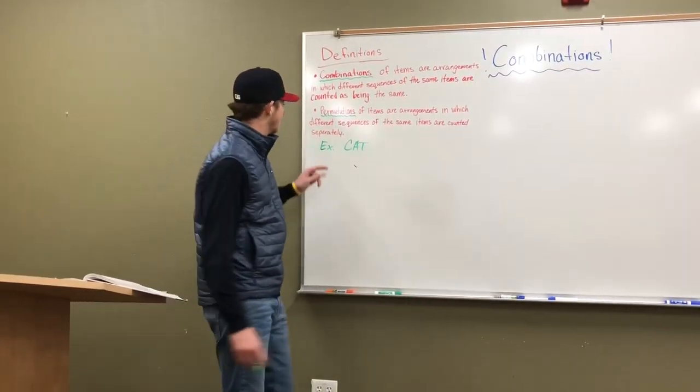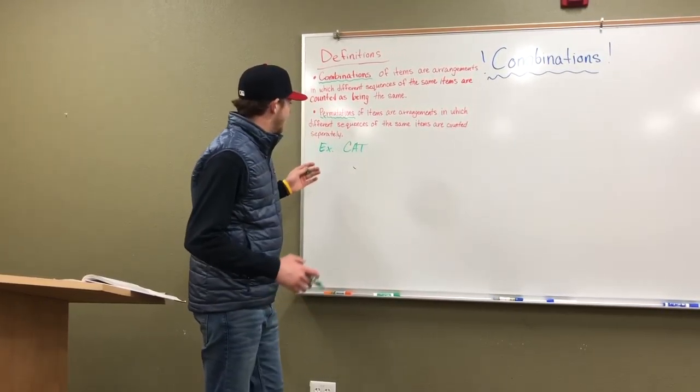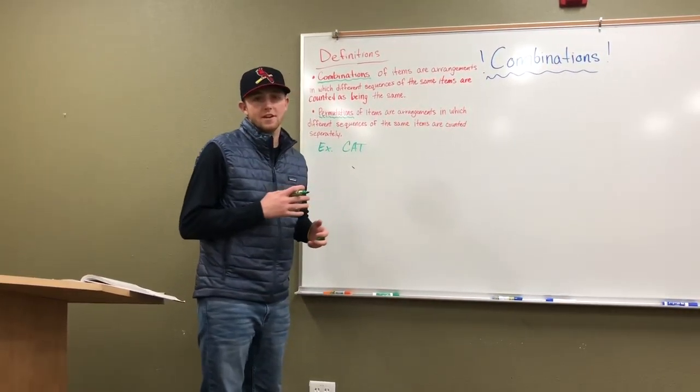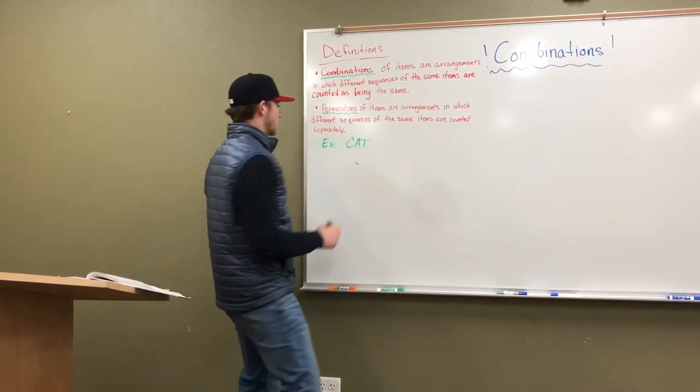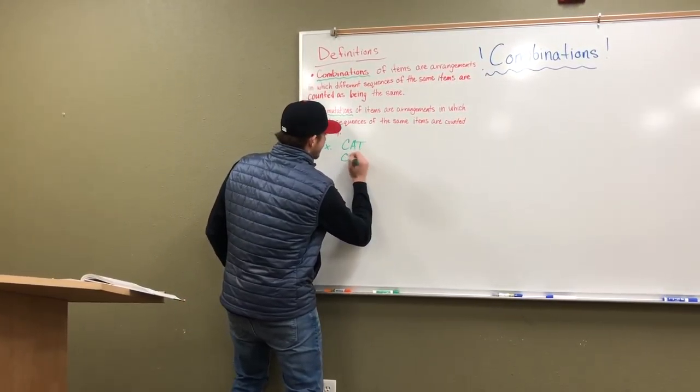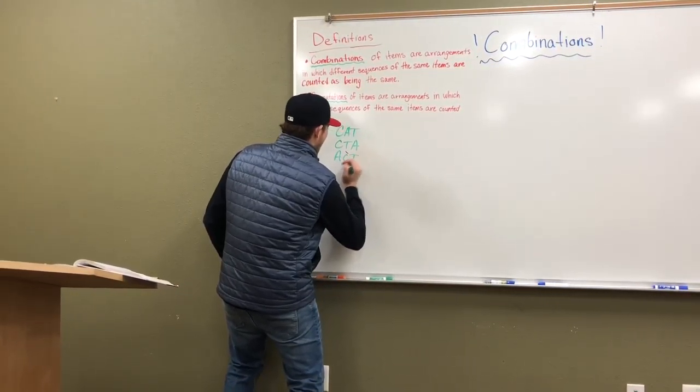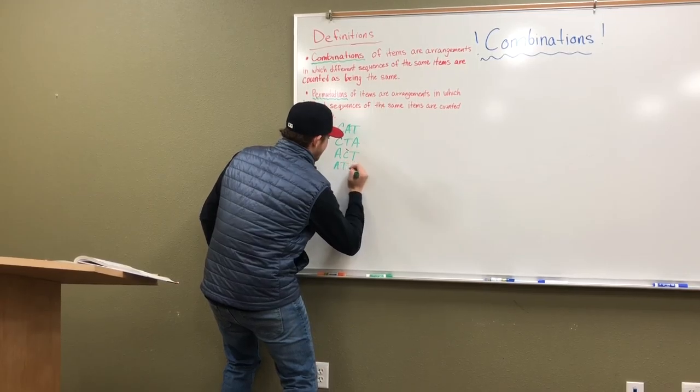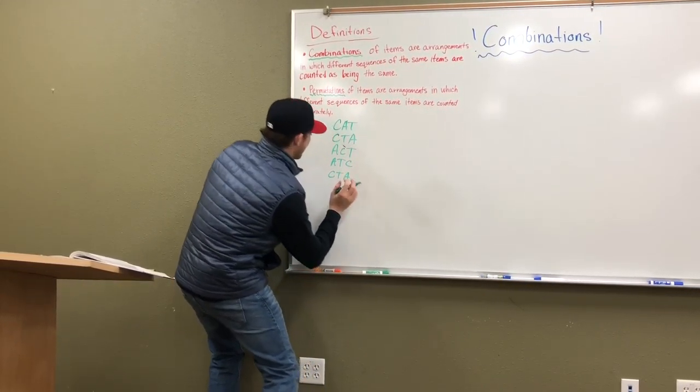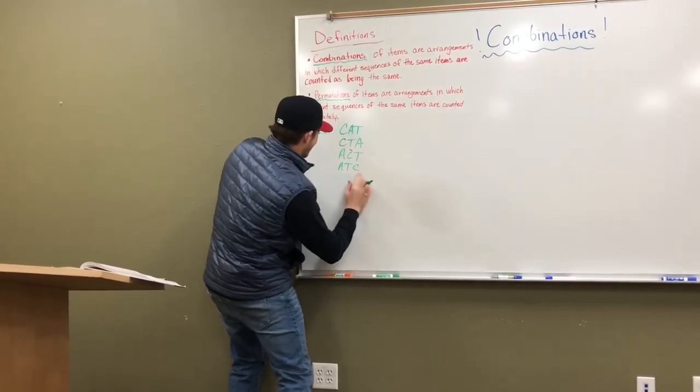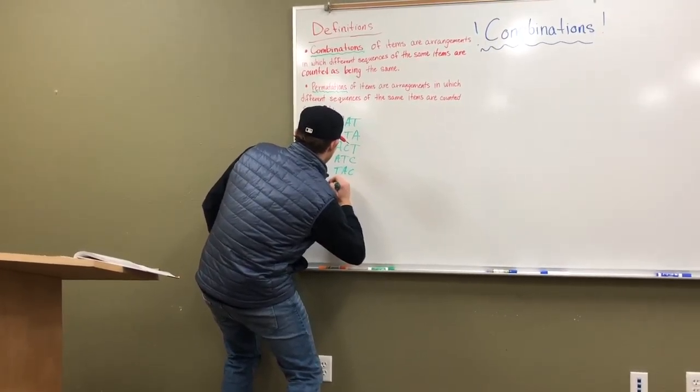For example, if you take a look at the word cat, there's multiple ways that you can put these letters together to essentially make a new word. So for example, we could go CTA, we could go ACT, and we can go ATC, and we can go CAT, and we can go TAC, and TCA.